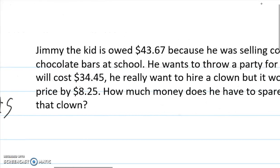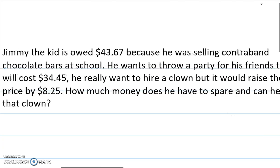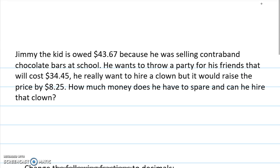Okay, let's look at this question here. This is something to show you how not scary decimals actually are. Because this is really just an addition and subtraction question. Jimmy the Kid is owed $43.67 because he was selling contraband chocolate bars at school. He wants to throw a party for his friends that will cost $34.45. He really wants to hire a clown, but it would raise the price by $8.25. Usually, numbers are important. Sometimes you have to be wary and careful that you don't use numbers that aren't important. And especially now that there's three numbers, we have to be careful about which numbers to use when.